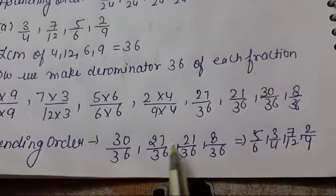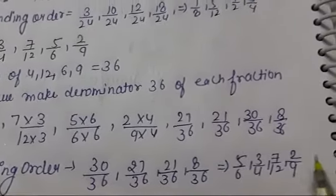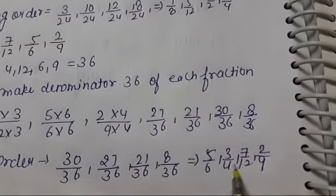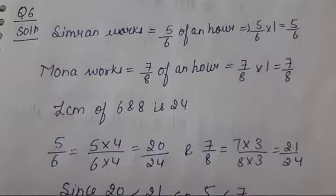8 upon 36, 21 upon 36, 27 upon 36, and 30 upon 36. Then 5 upon 6, then 3 upon 4. Is that clear, students?